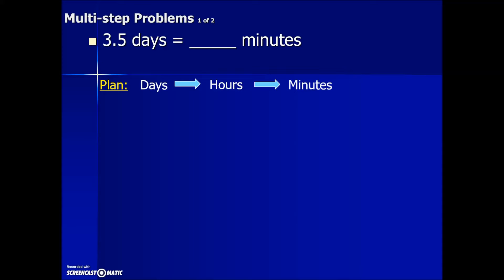The procedure is basically the same. We're still going to start with the given value as a fraction, which means we're going to put a denominator of one, and then we'll set up our conversion factor fractions that are equivalent to one so that the days cancel out.